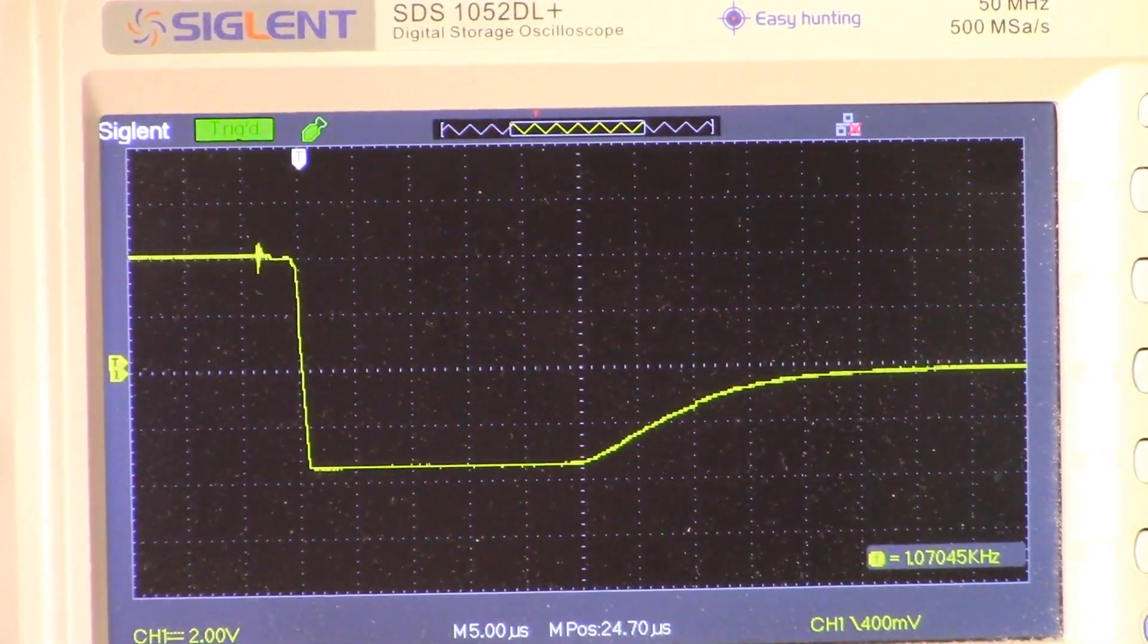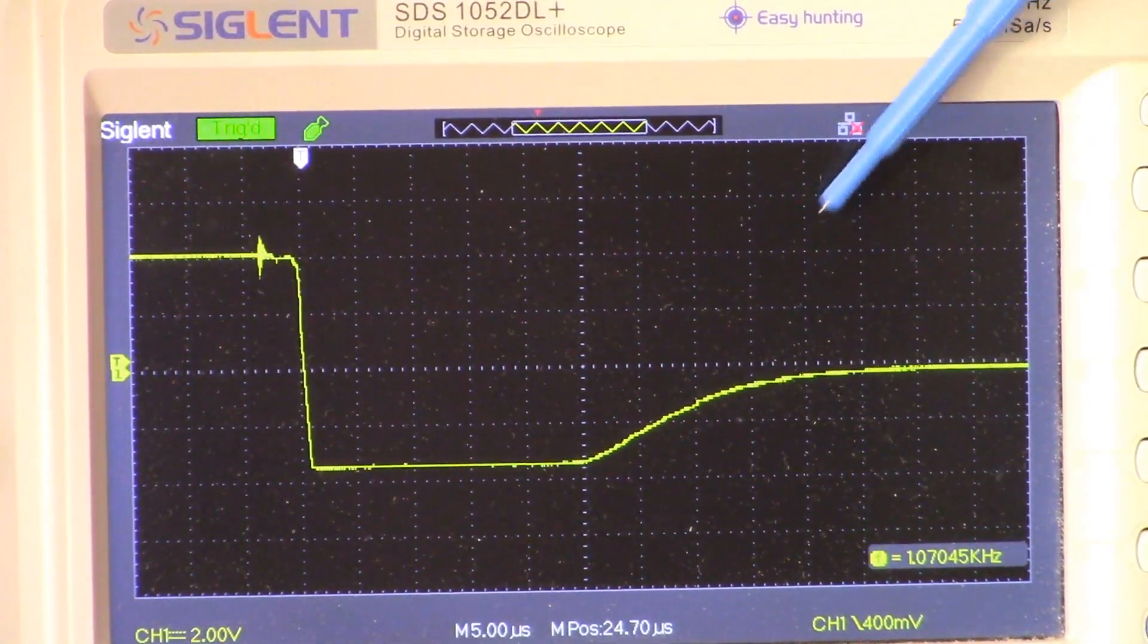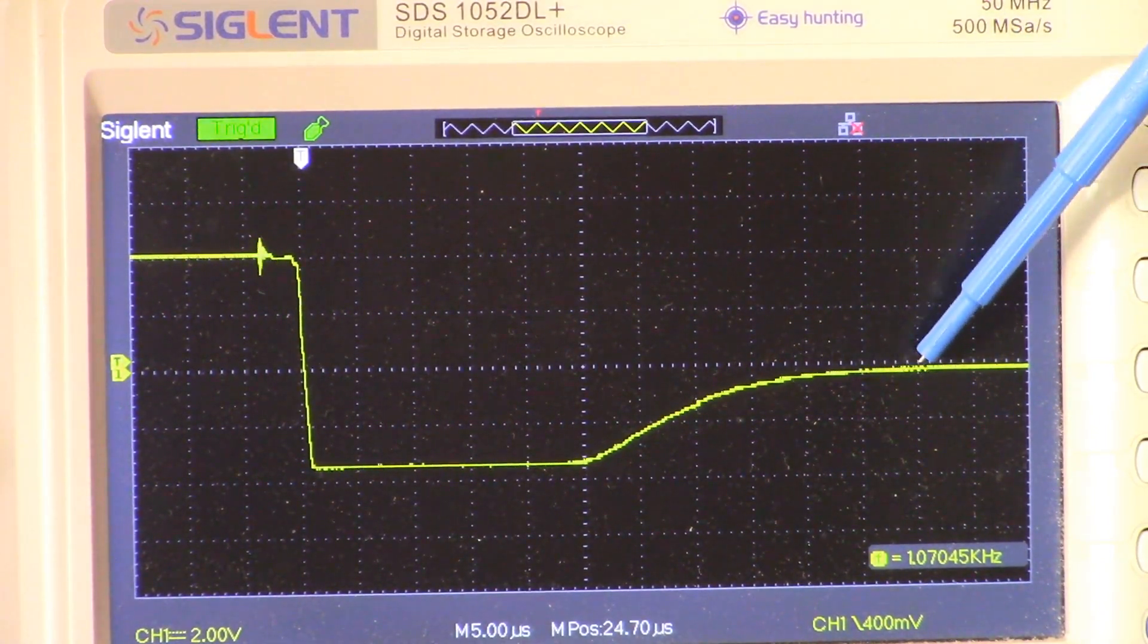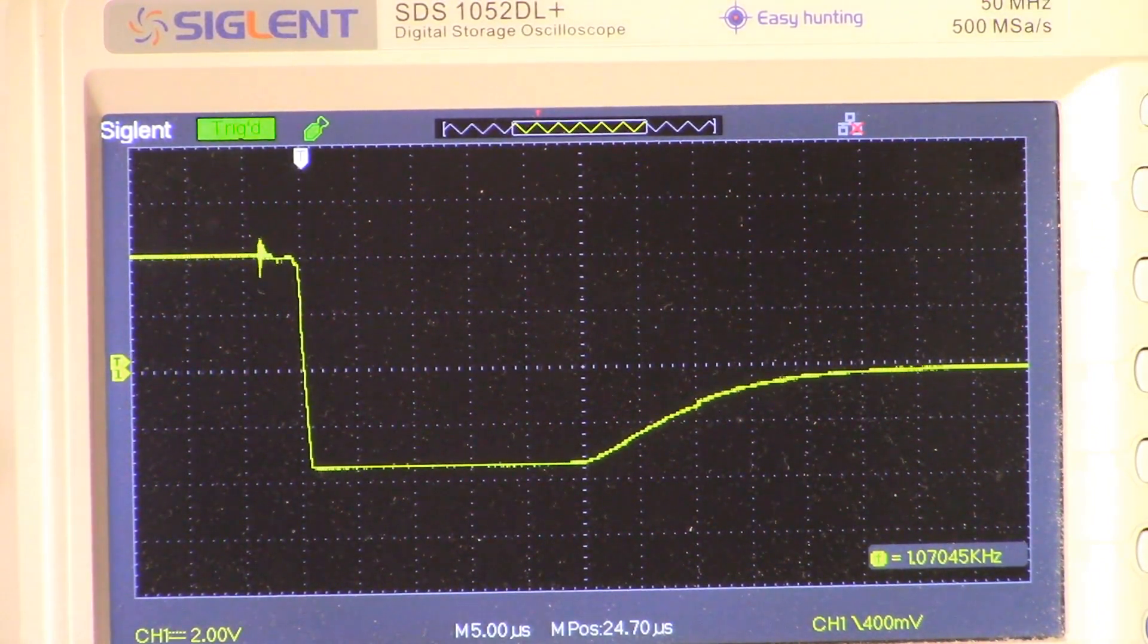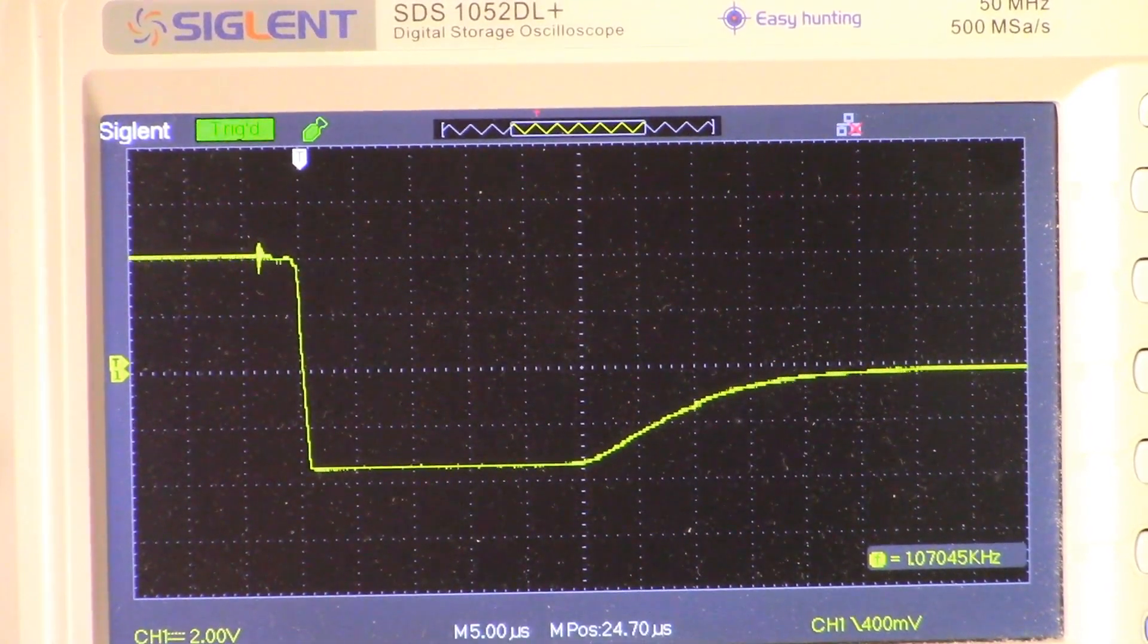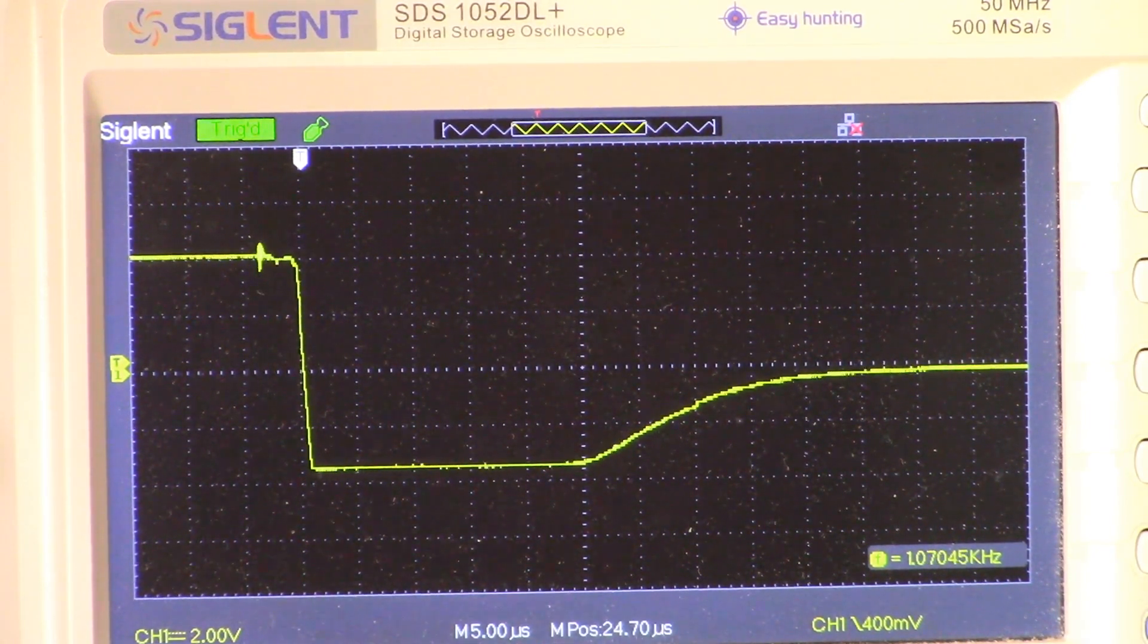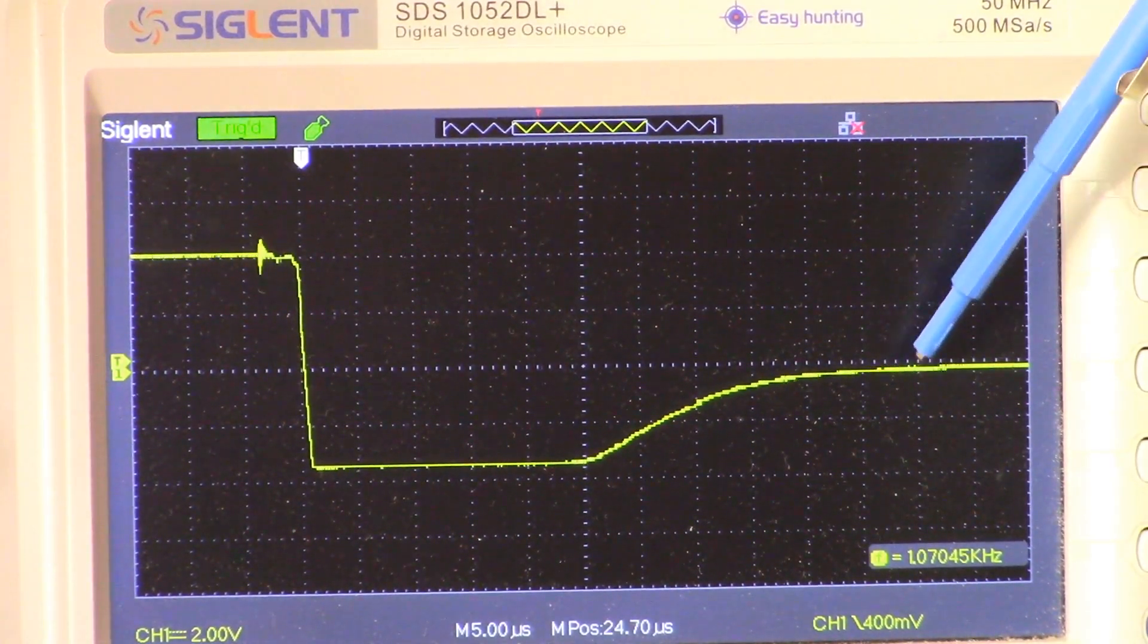One other point about RV1: you can see our signal here as it comes up out of saturation. If you were to swap out the op amp—in this project we're using an NE5532—if you were to swap that out, you would have to come back in again and adjust that RV1 pot to zero yourself out here.